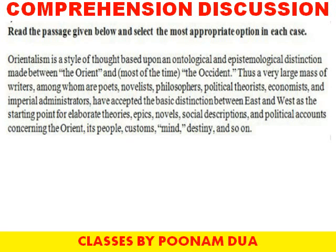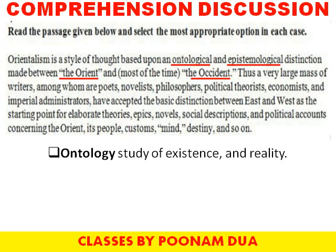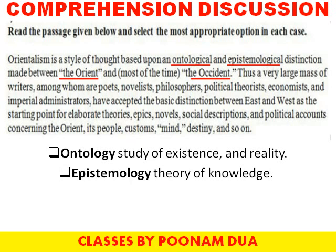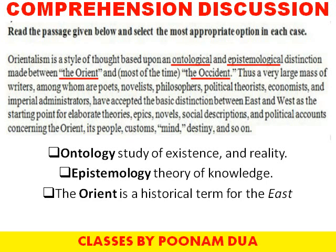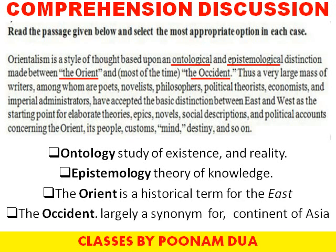Now in this paragraph we have given the meaning of tough words. The first two lines: Orientalism is a style of thought based upon the ontological and epistemological distinction made between the Orient and the Occident. Ontology is the philosophical study of existence — you can say existence and reality. Epistemology is the study or branch of philosophy concerned with the theory of knowledge. Orient is a historical term for the East, traditionally comprising anything that belongs to the Eastern world in relation to specifically Europe, because Europe was the main continent which was colonized. Occident is largely used as a synonym for the continent of Asia, the people of Asia, and the habits of Asian people.